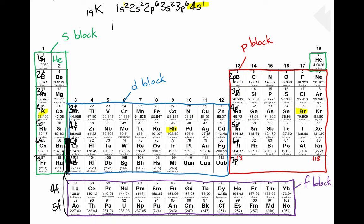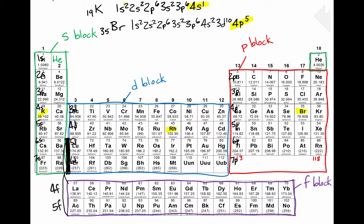Let's try the configuration for bromine, element number 35. Notice that the electron configuration for bromine ends with 4p5. Look at where bromine is on the periodic table — it's in the 4p row, and it is 1, 2, 3, 4, 5 elements over. It's not a coincidence: bromine's electron configuration ends 4p5.